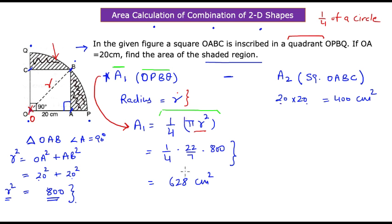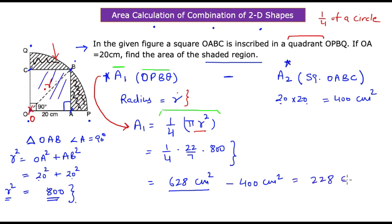We have our quadrant area of 628 cm². Subtracting A2, the square area of 400 cm², gives 228 centimeters squared. This is the area of the shaded region, highlighted in green.